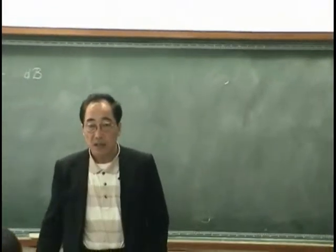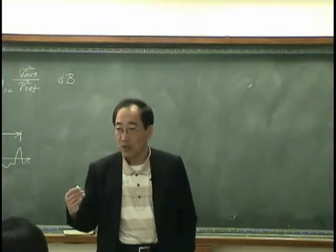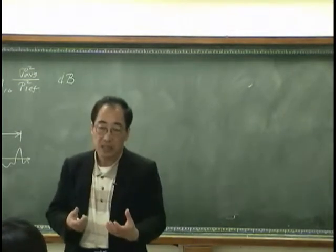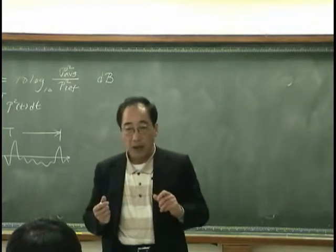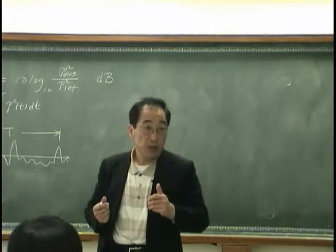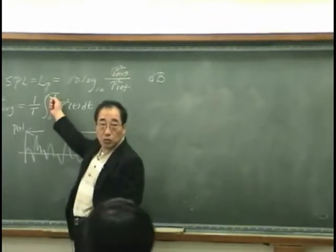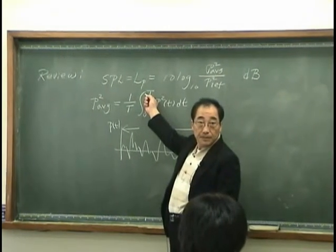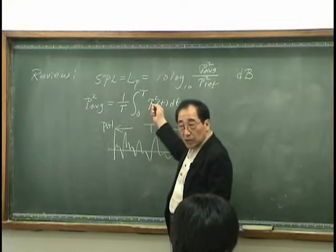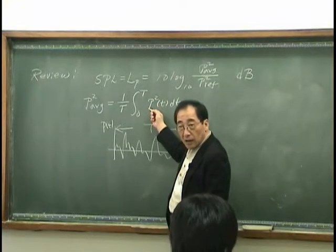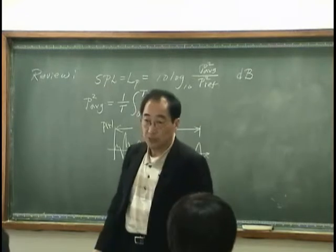That's what a sound pressure level meter actually does. When you have a sound pressure level meter, you have two knobs — or many knobs — with fast mode and slow mode. The fast and slow modes stand for which value of capital T you are using for the time average. The meter operates on P-squared(T) as illustrated, and then indicates the value on the dashboard scale.